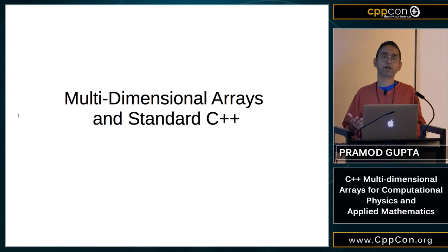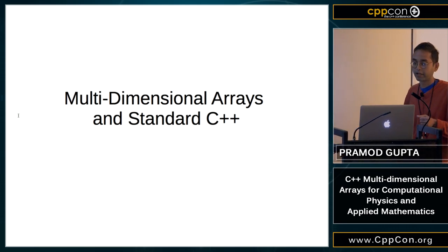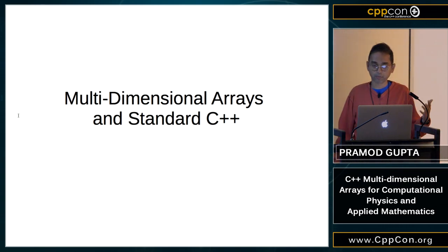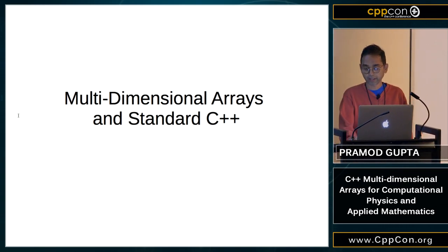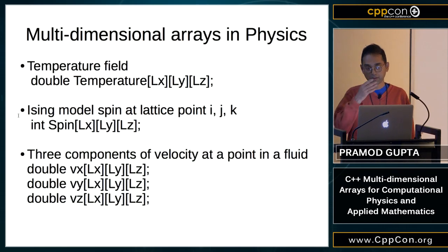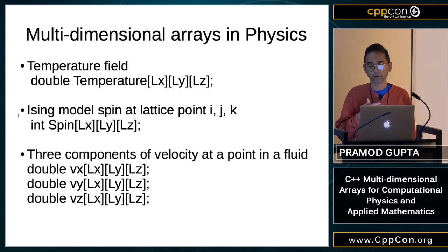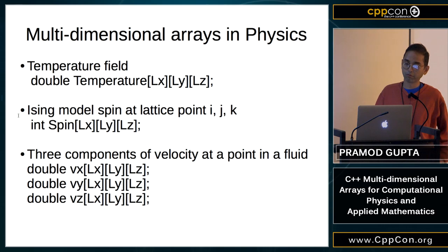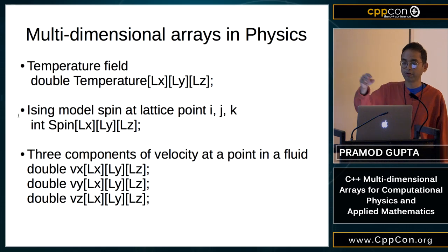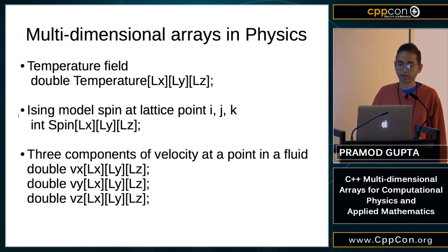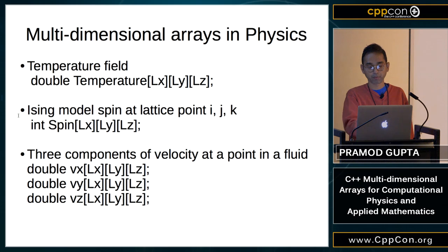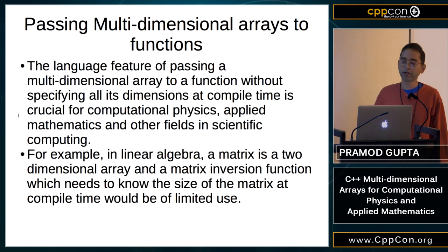In a lot of systems programming, you don't really see multi-dimensional arrays — one dimension is often enough. C and C++ have tended to focus on that. But in physics, applied math, and scientific computing, multi-dimensional arrays — two, three, four dimensions — are very common. Examples include temperature fields on a 3D grid, spin models on a 3D lattice, and three components of velocity at a point in a fluid.